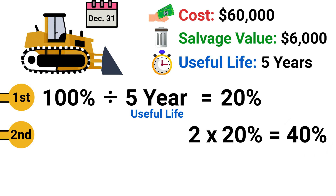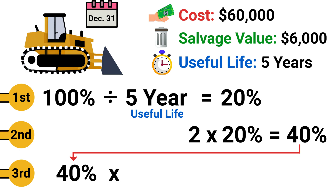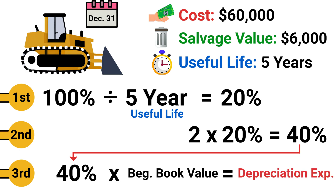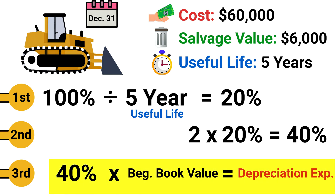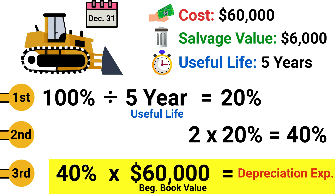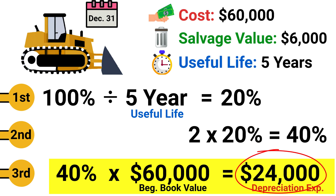Third, we take the Double Declining Depreciation Rate and multiply it by each period's beginning book value to get depreciation expense for that period. In our example, we take our 40% computed in Step 2 and multiply it by the beginning book balance of $60,000. This gives us depreciation of $24,000 for the first year.